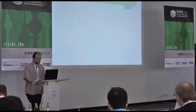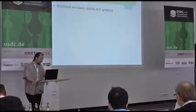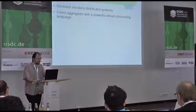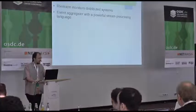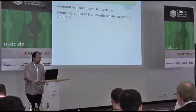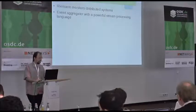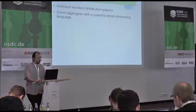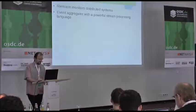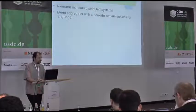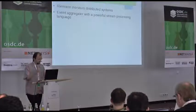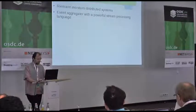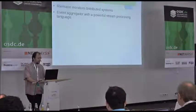The other tool I will talk about is Riemann. Riemann is a system that monitors distributed systems — pretty much an event aggregator with a very powerful stream processing language. You send it protocol buffers events, or events formatted into protocol buffers serialization format. The language used is Clojure, which is a Lisp language built on the Java Virtual Machine.